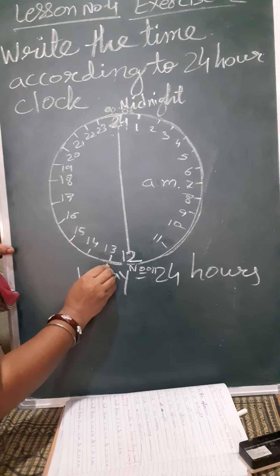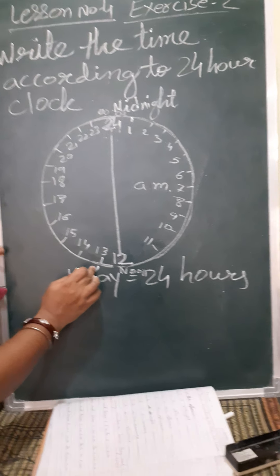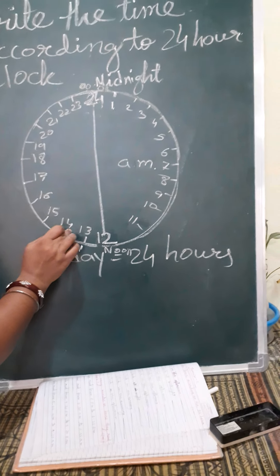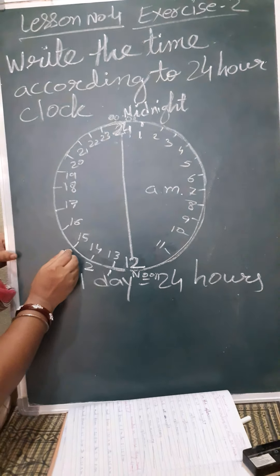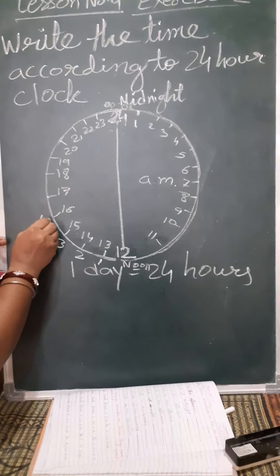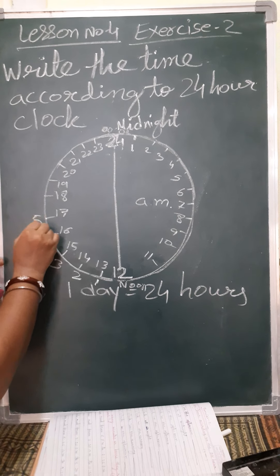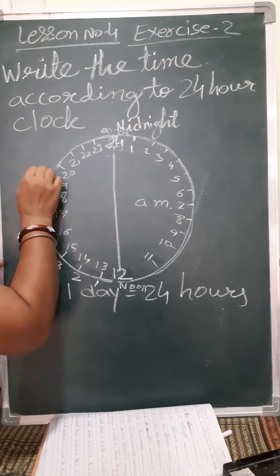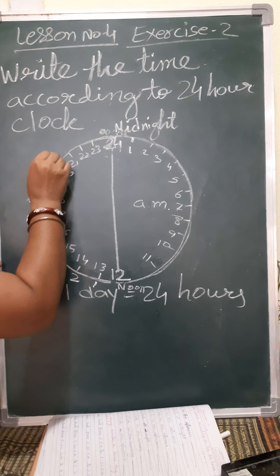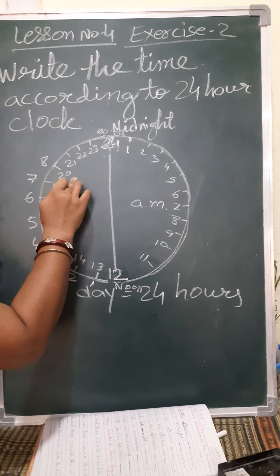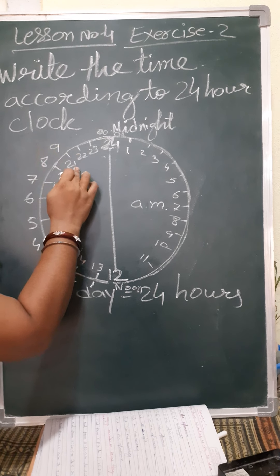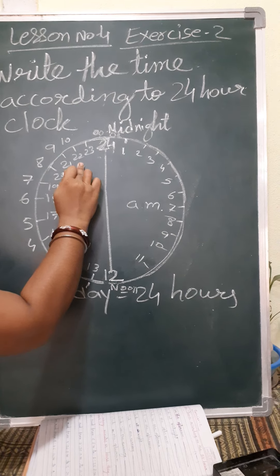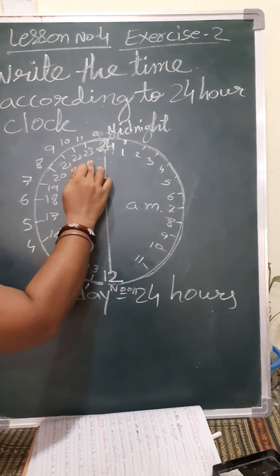In 12-hour time, 1 o'clock becomes 13, 2 o'clock is read as 14, 3 o'clock as 15, 4 o'clock as 16, 5 o'clock as 17, 6 o'clock as 18, 7 o'clock as 19, 8 o'clock as 20, 9 o'clock as 21. At night: 10 o'clock is read as 22, and 11 o'clock is read as 23.